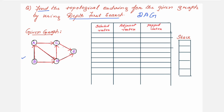This is the given graph. It has 5 vertices: A, B, C, D, and E. It is a directed acyclic graph. The procedure here is to make columns to keep track of every vertex — whichever vertices you are visiting. You need to see whether you have visited the adjacent vertices of each vertex. Keep one stack, and store whatever elements you pop from the stack in a 'popped vertex' column. So you make three columns: selected vertex, adjacent vertex, and popped vertex — and of course, you need a stack.